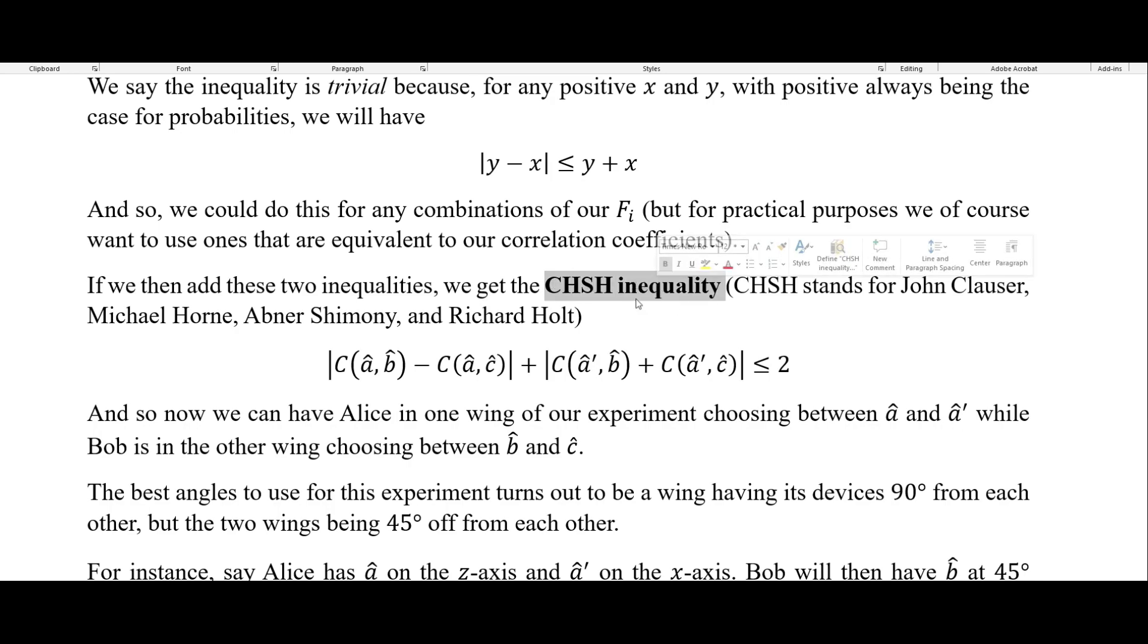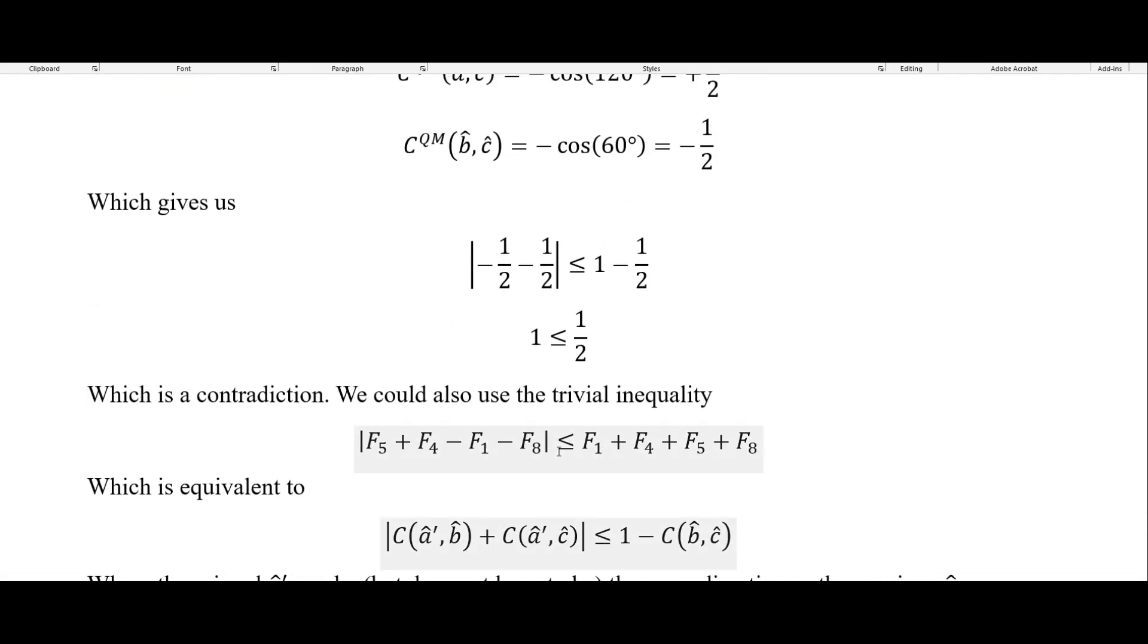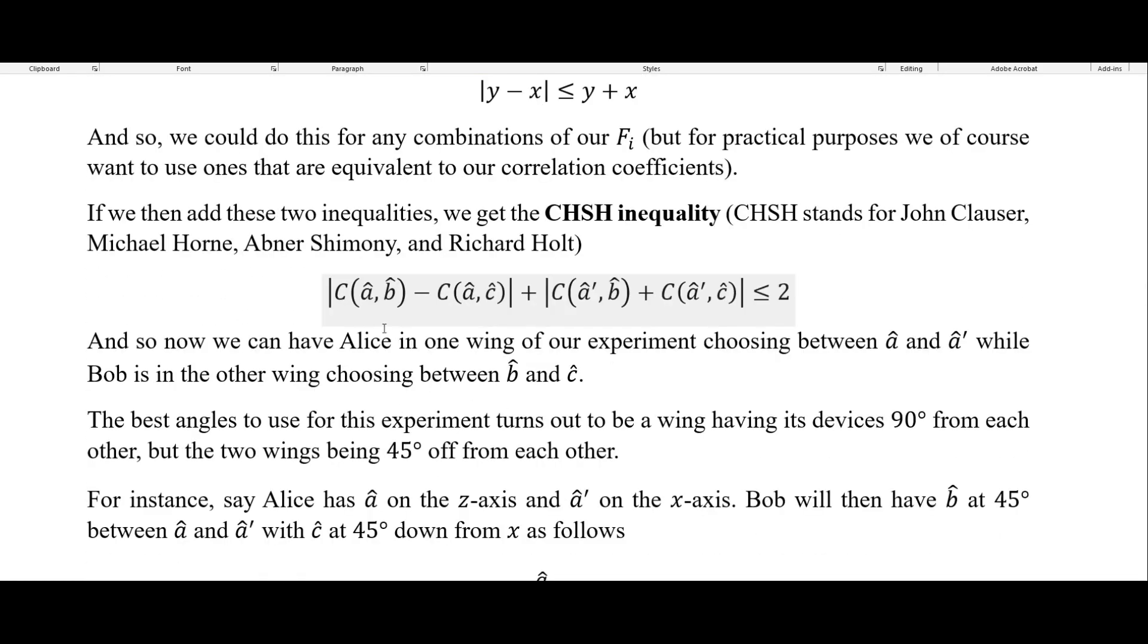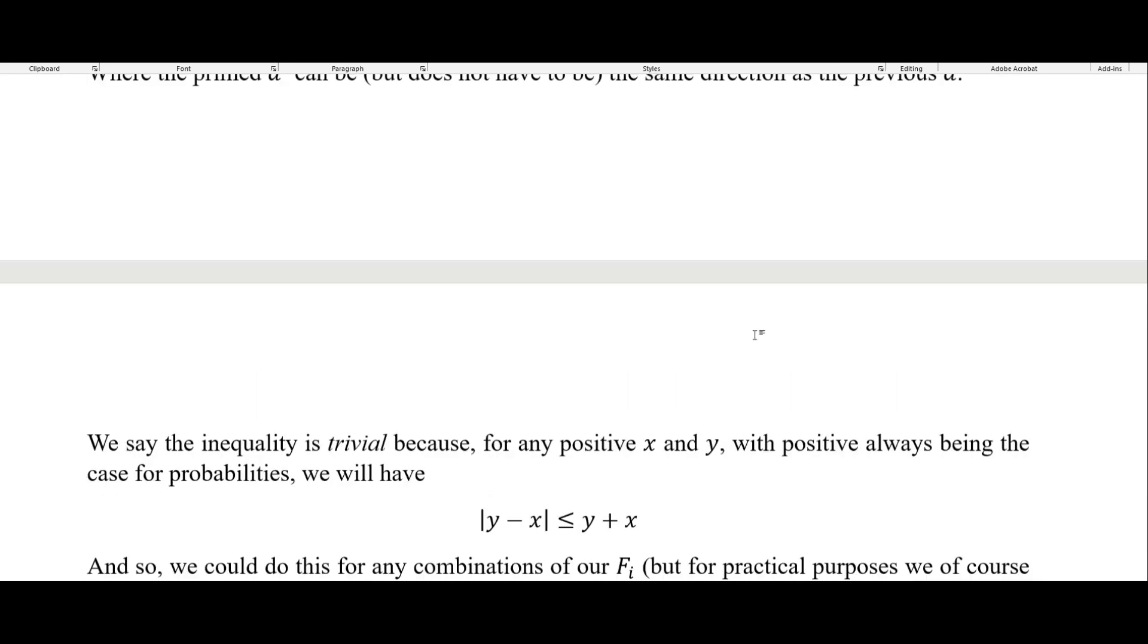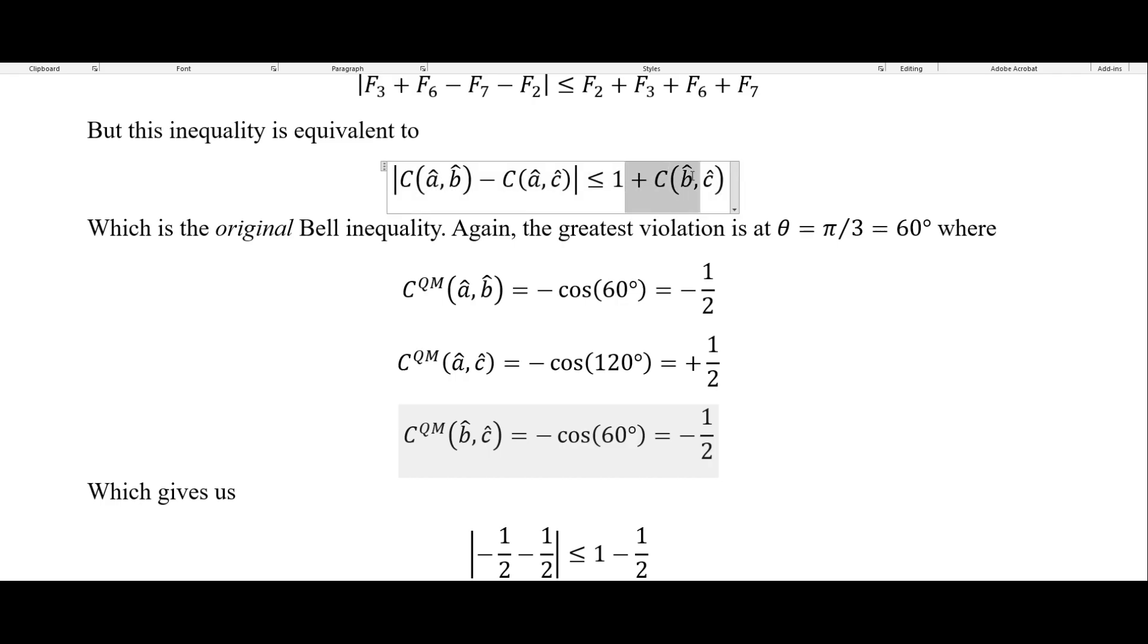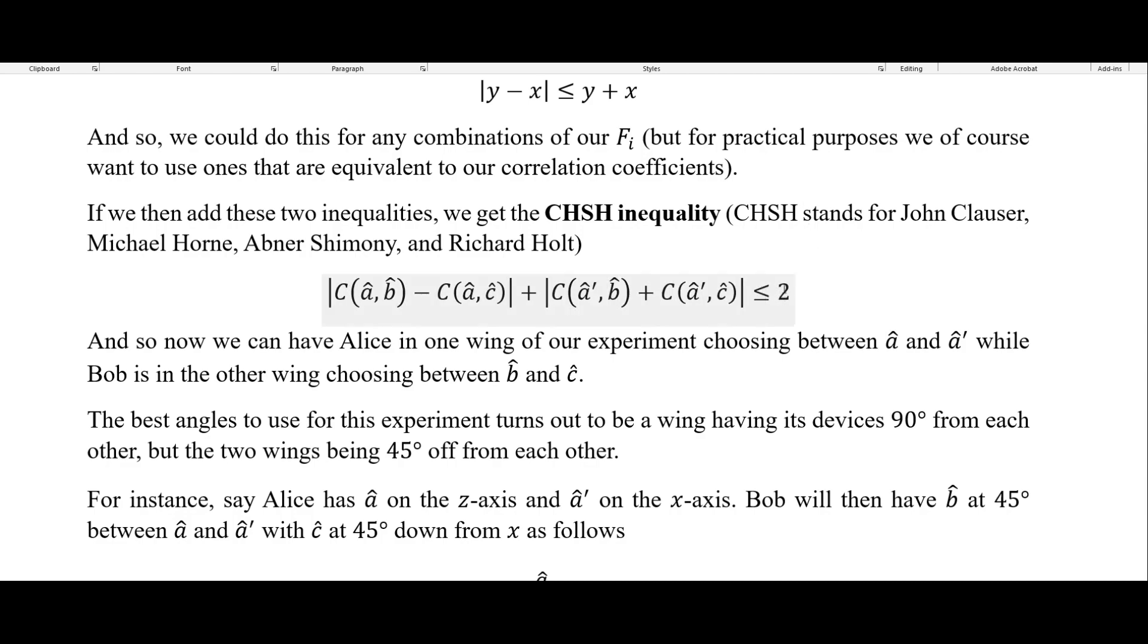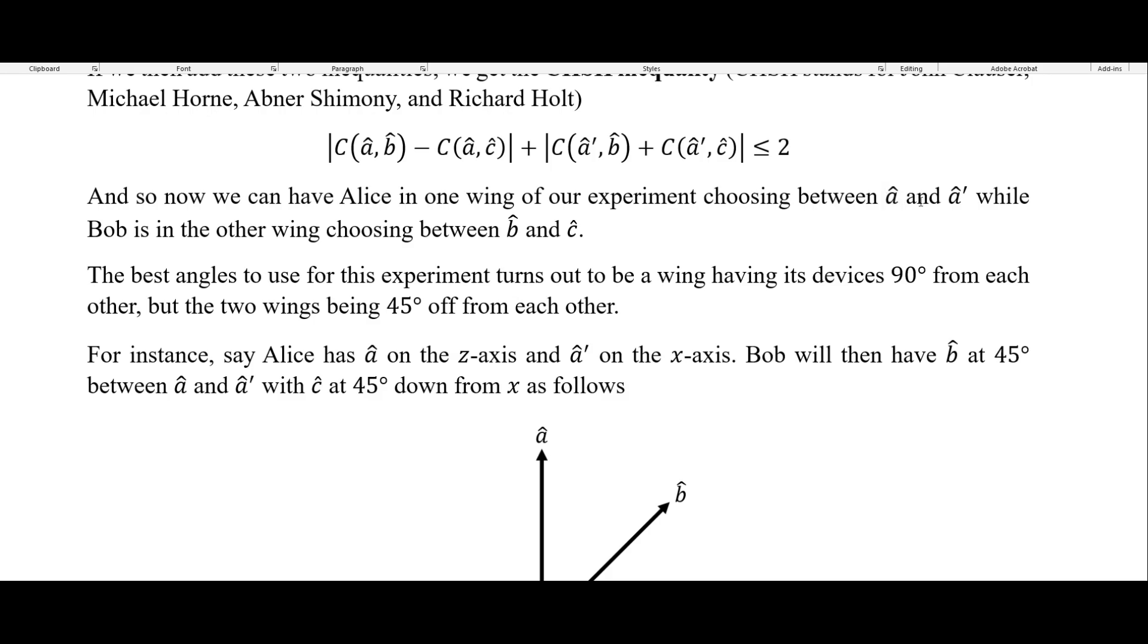And so if we add these together, these two inequalities, we get what is called the CHSH inequality. And so the CHSH is just the first letters of these last names here for John Clauser, Michael Horn, Abner Shimony, and Richard Holt. And so we get this right here. So we just added this one right here to this one right here. So remember from our two inequalities up here. So this one and this one right here. So we add those together and then this has to be less than or equal to two because we now have this one plus this one, which is two. Then this minus this just cancel out. So this has to be less than or equal to two if we are to have local hidden variables.